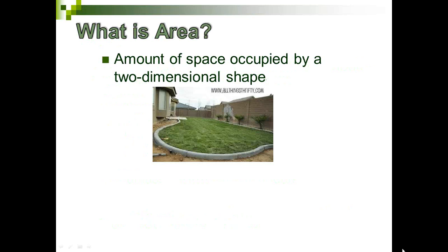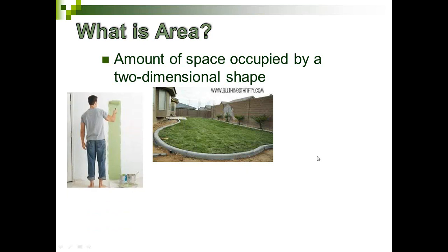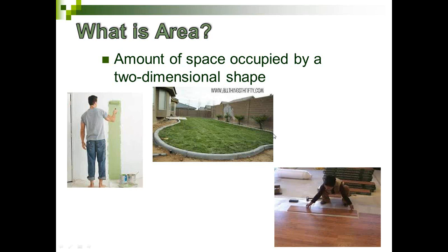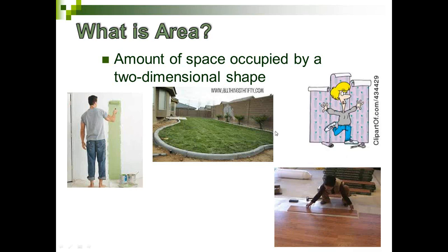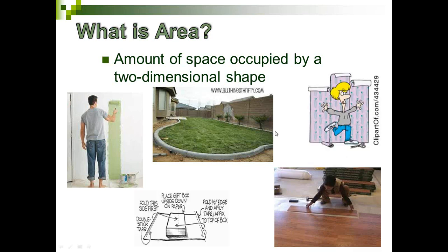We're going to first begin by reviewing area. Area is the amount of space occupied by a two-dimensional shape. We tend to think of this as perhaps a yard, but we can also contextualize it as things that we need to cover, like paint on a wall, flooring for a room, wallpaper, or wrapping a gift box.